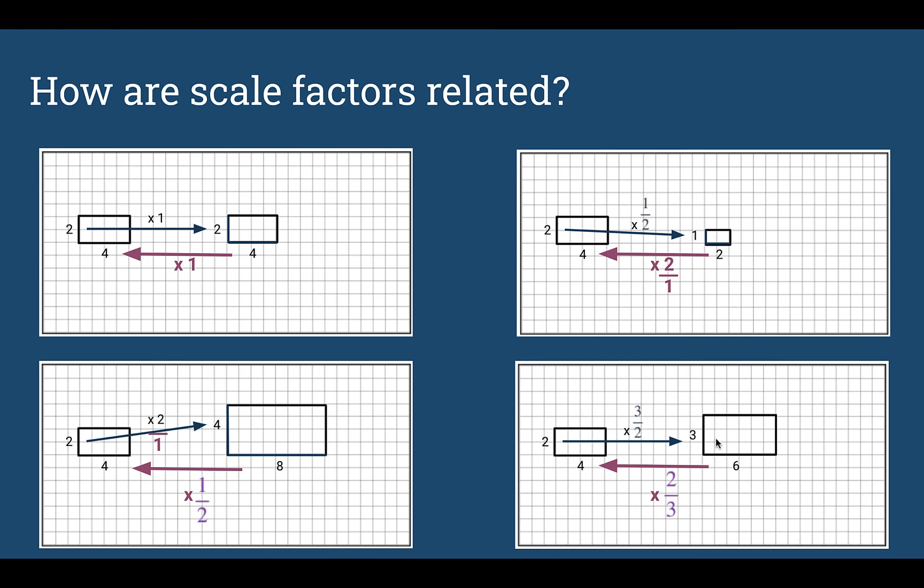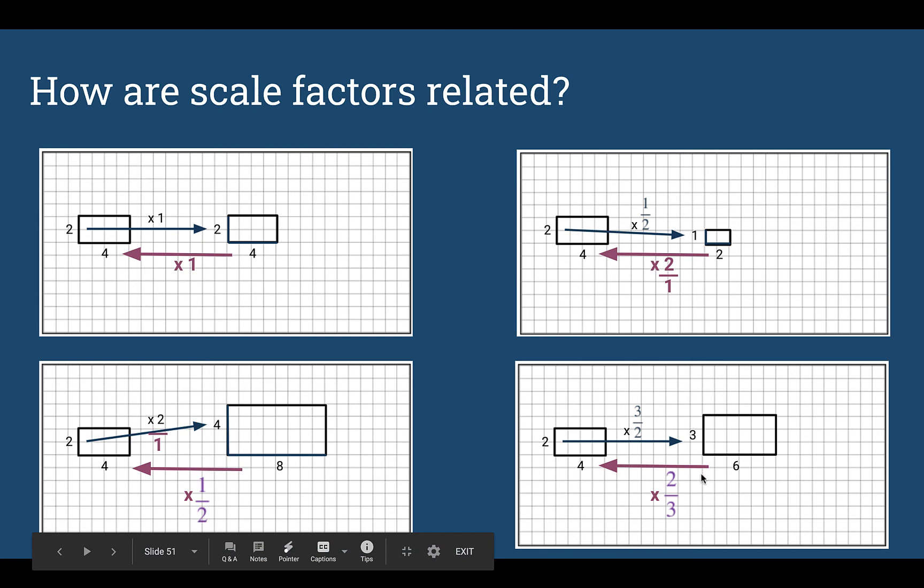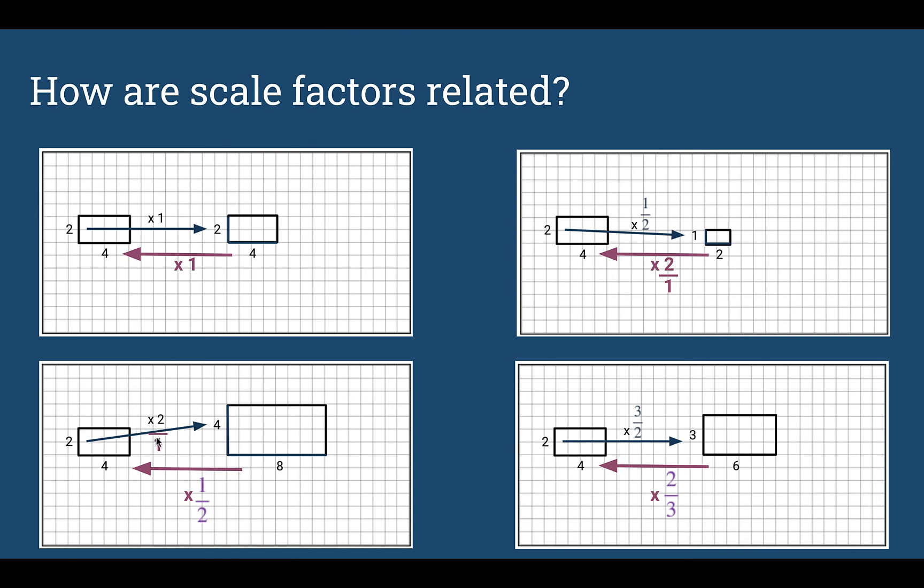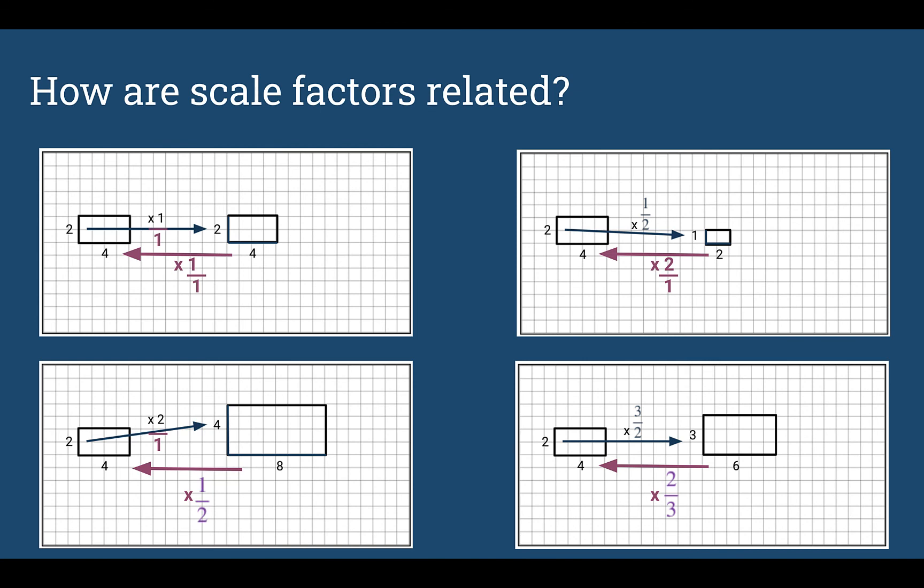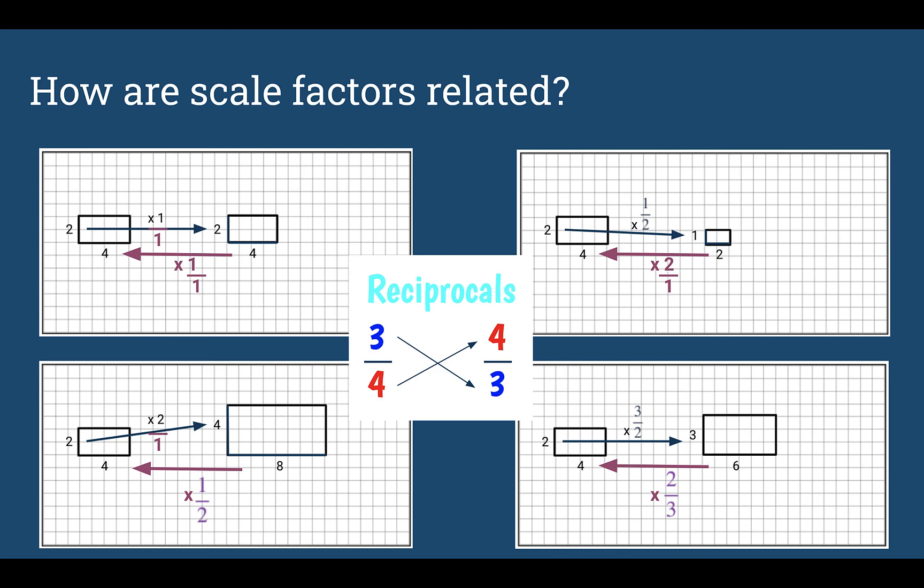If you look at this last example, to go forward we had 3 over 2. To go backward, we had 2 over 3. They're flipped, they're reciprocals. If we look at either the second or third example, going forward we had 2 over 1, going backward we had 1 over 2. Again, flipped. But what about the first example? If we write both of those as fractions over 1, we can see they are still reciprocals of each other. So scale factors going forward and backward are reciprocals.